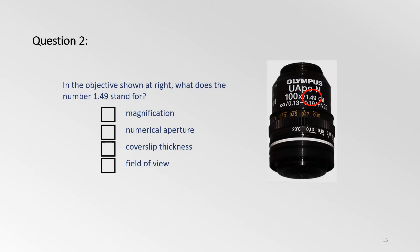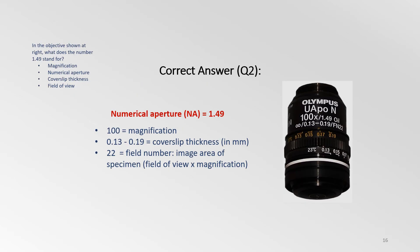Let's try another question. In the objective shown, what does the number 1.49 stand for? Magnification, numerical aperture, coverslip thickness, or field of view? 1.49 is the numerical aperture of the objective. 100 is the magnification. 0.13 to 0.19 is the range of coverslip thicknesses that are suitable for the objective. 22 is called the field number, which defines the image area of the specimen.